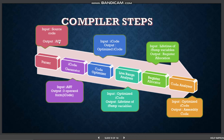For the parser, the input is source code and the output is an AST file. For the i-code generator, the input is the AST file and the output is a three-operand i-code. For the code optimizer, the input is i-code and the output is optimized code. The live range analyzer takes optimized i-code as input and its output — the lifetime of temporary variables — goes into the register allocator, whose output is a register allocation. The code generator takes optimized i-code and outputs assembly code.